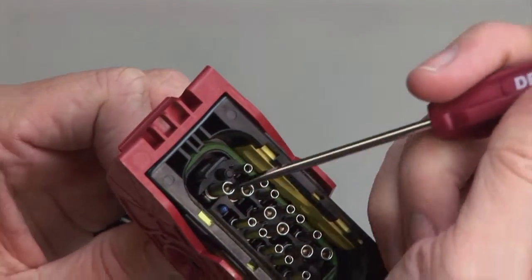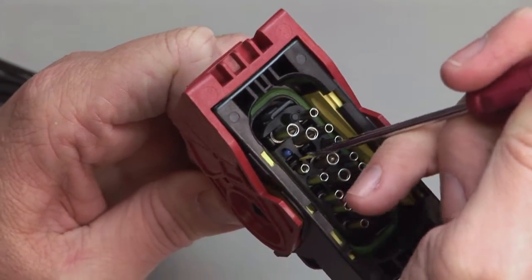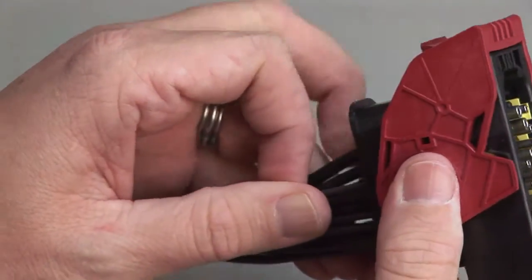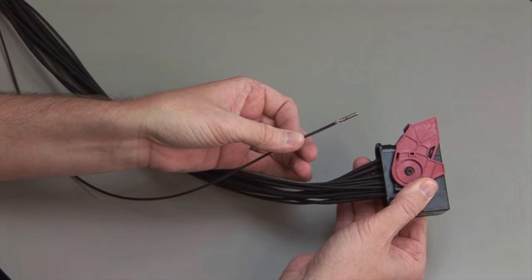To remove the contacts, release the locking finger by moving it away from the shoulder of the contact with a screwdriver, while at the same time gently pulling the wire through the rear grommet or wire router. Repeat this process for all of the wires in the plug and the receptacle.